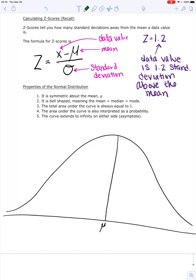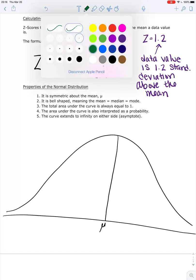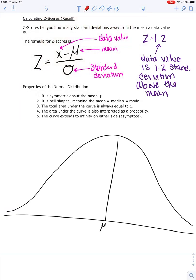Okay, what else can we talk about with this? Remember we have our empirical rule. So our empirical rule told us that 68% of the data was between one standard deviation below and one standard deviation above.